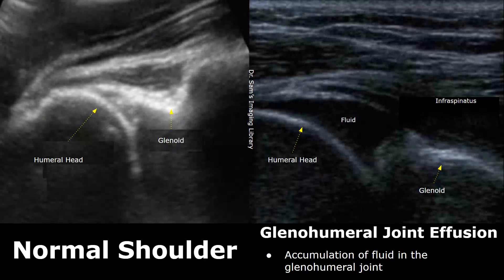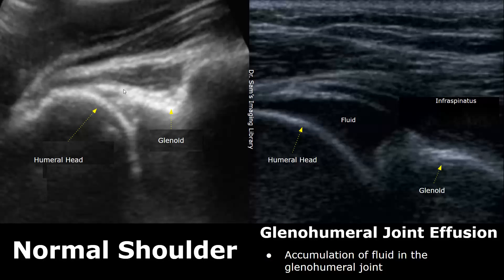This image shows us the glenohumeral joint. This is the glenoid, which is the lateral part of the scapula where the humeral head attaches. And over here we have glenohumeral joint effusion.